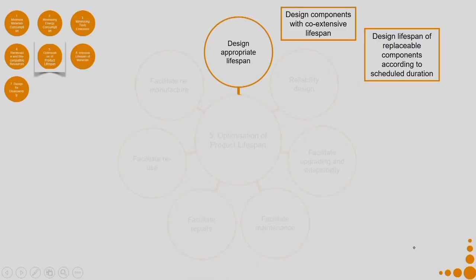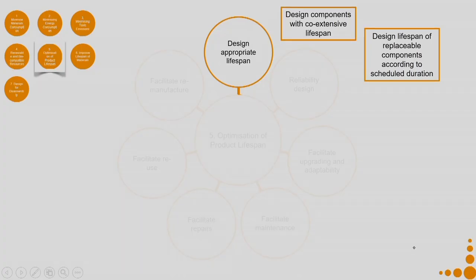Design lifespan of replaceable components according to scheduled duration. For example, in a water purifier with 3 components that need replacement every 1 year but 1 component needing replacement every 1 month, can I design the machine so that these components can be replaced together? Select durable materials according to product performance and lifespan. Very importantly, avoid selecting durable materials for temporary products or components.